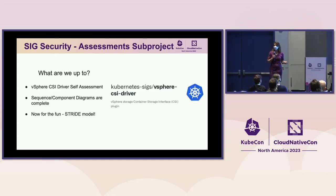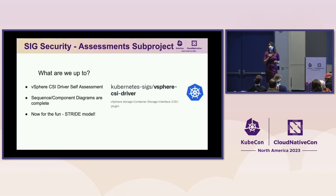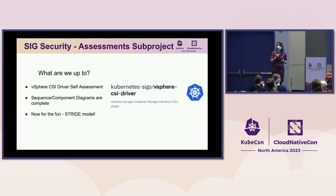What have we been up to? Currently we are focusing on the threat model for the vSphere CSI driver. I do happen to work at VMware — that's a coincidence. Today we have completed all of our data flow diagramming: we've got all of our sequence diagrams and component diagrams in order, and now we're poised to begin the STRIDE model, the actual threat modeling part of the process.